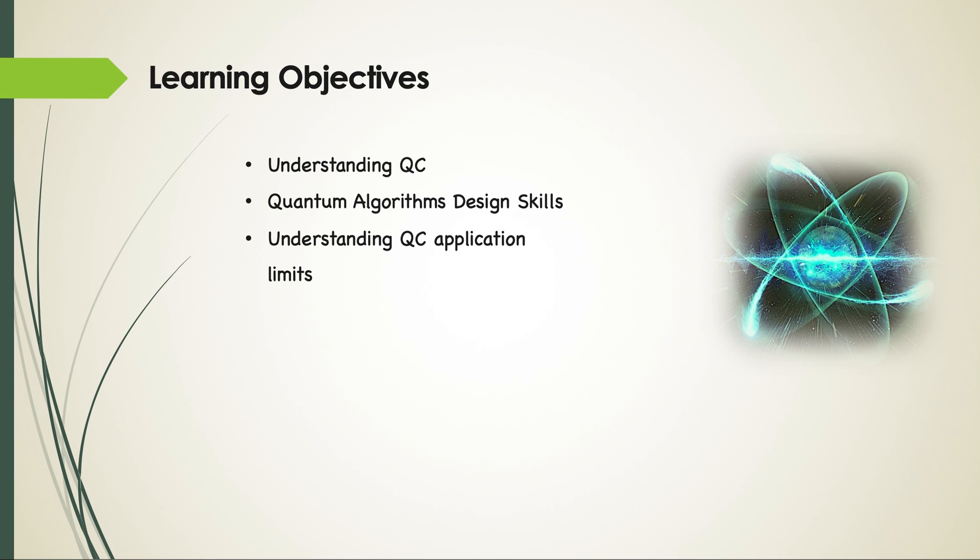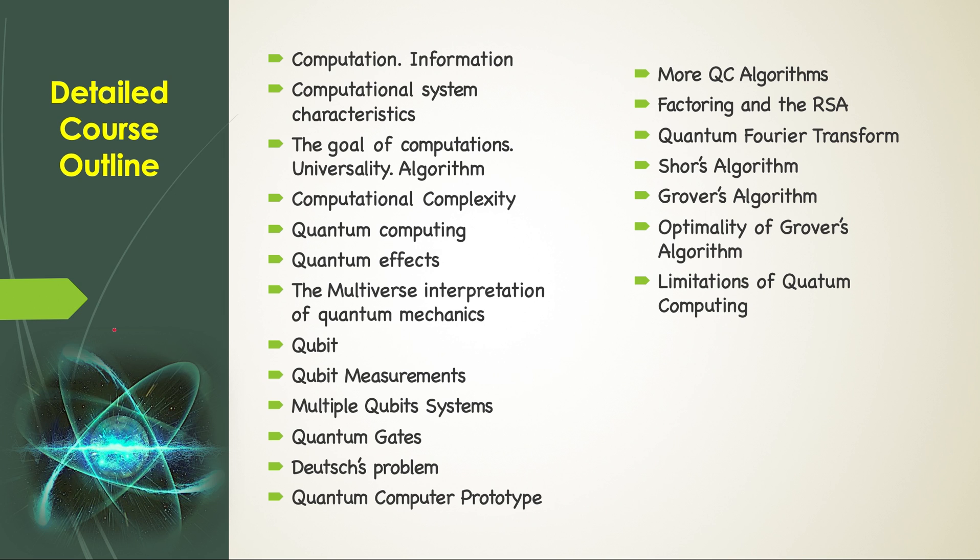So now that we have some idea about what we are going to study in this course, let's see the course outline in some detail. We will study about computation and information, computational system characteristics, the goal of computations, universality algorithms, computational complexity, quantum computing, quantum effects, and the multiverse interpretations of quantum mechanics.